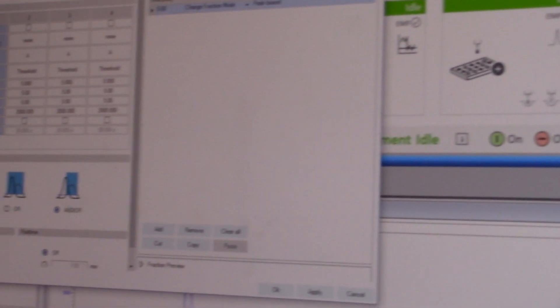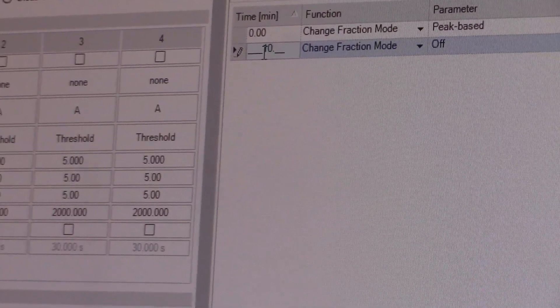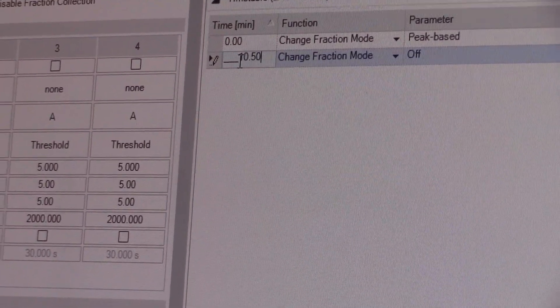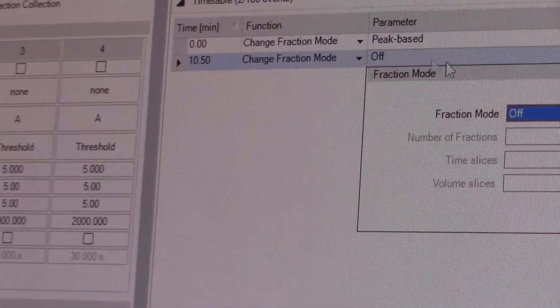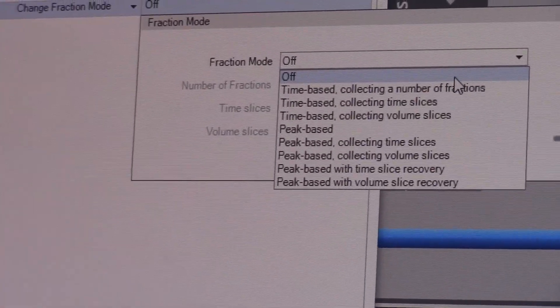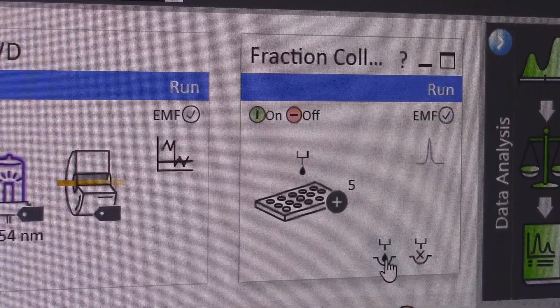Lastly, there is the fraction collector panel. Here is where you can set up automatic fraction collecting at any time you please with a variety of ways to choose how to collect the fraction. If collecting fractions manually, you do so by clicking these two buttons.